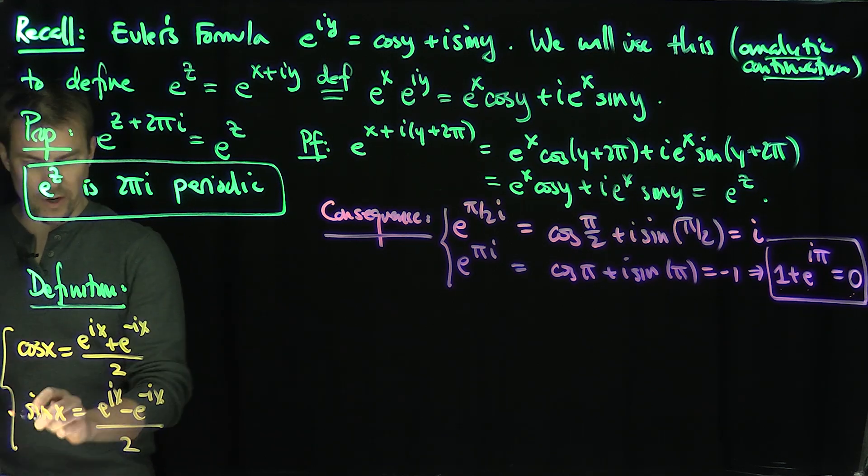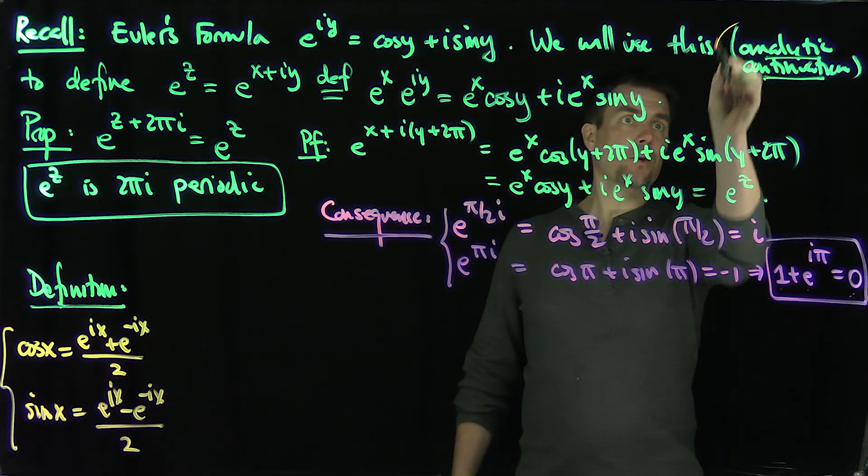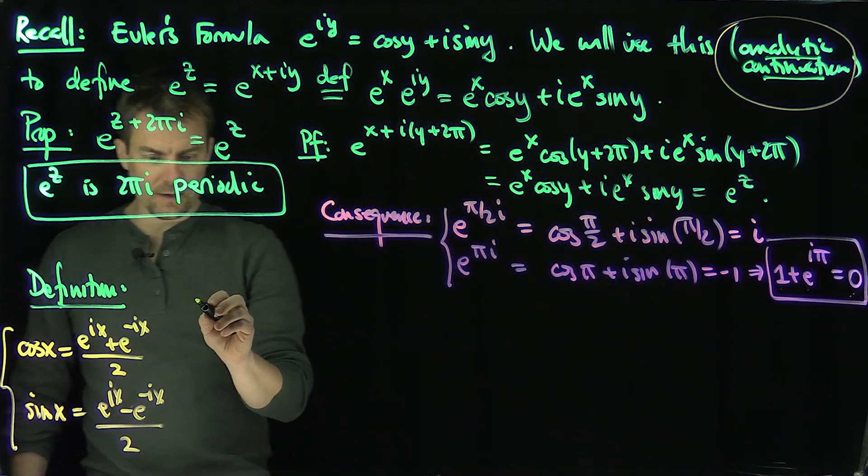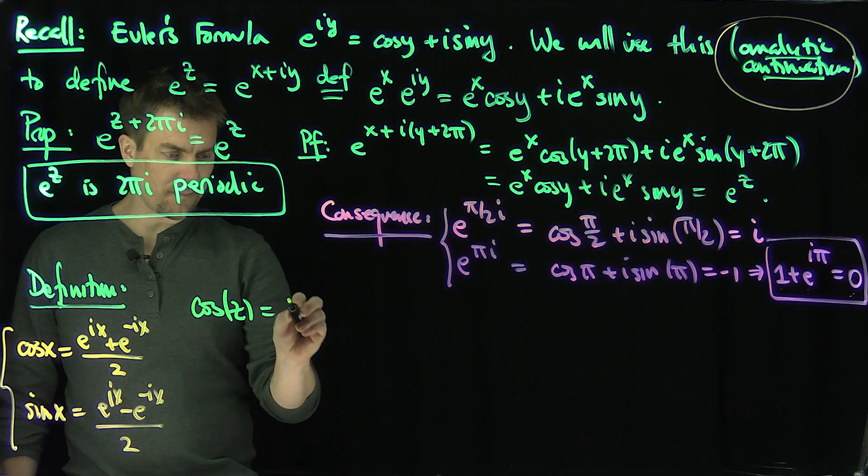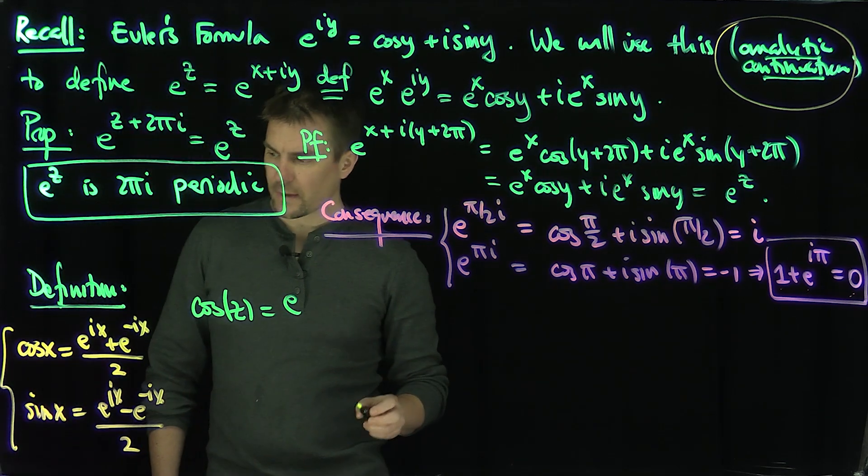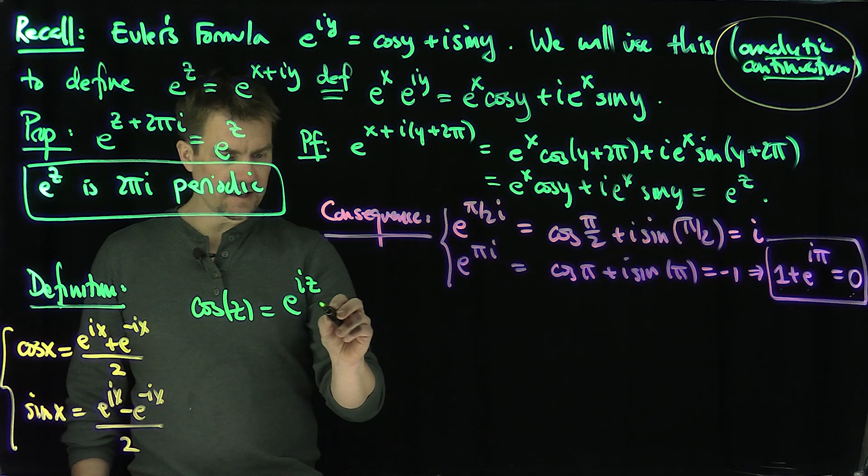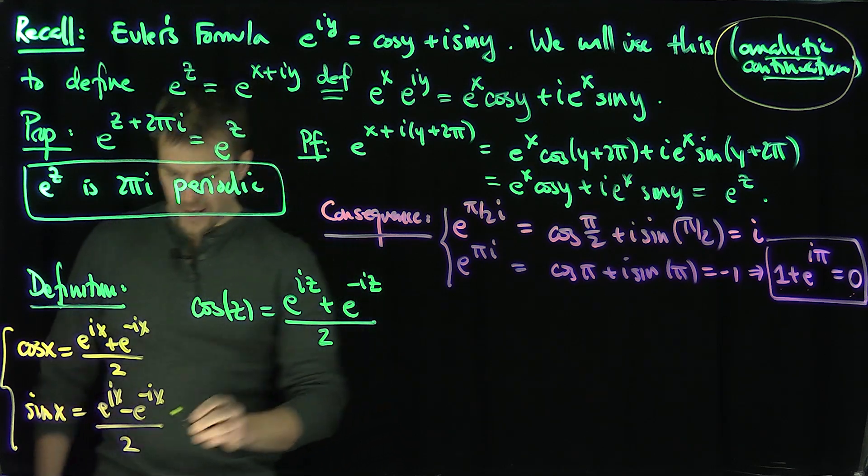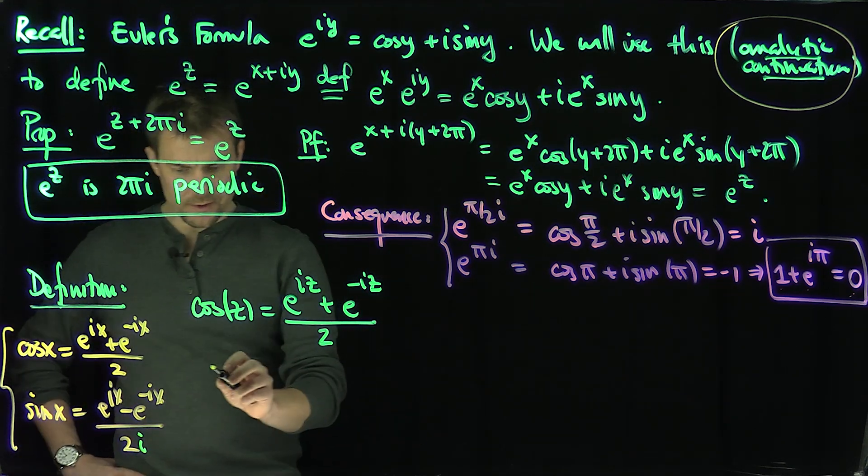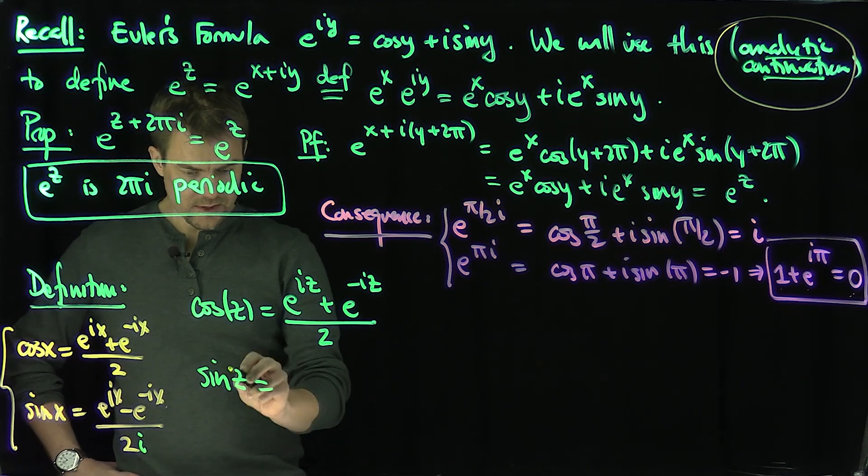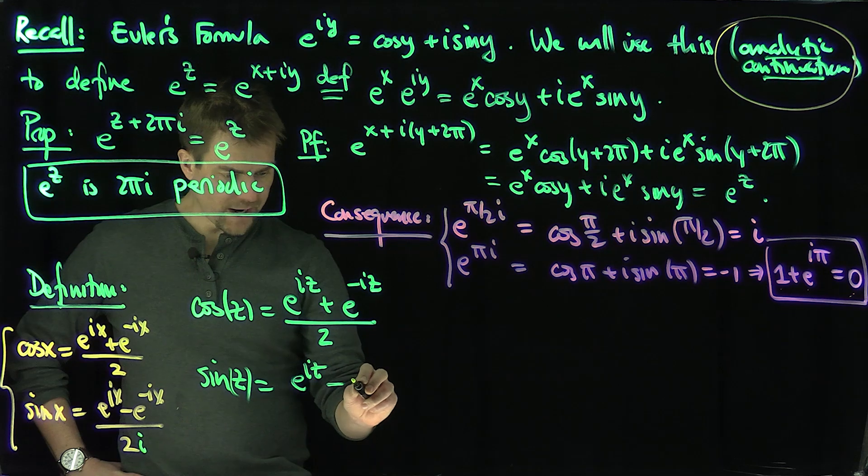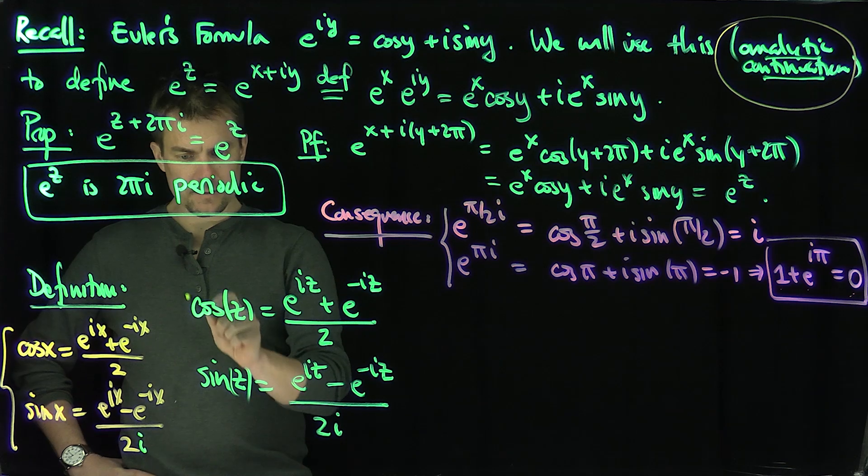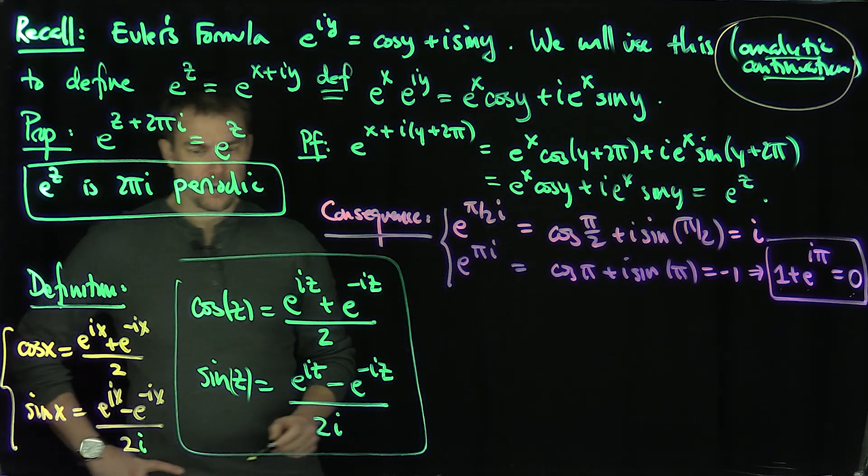I'm going to use analytic continuation, which we haven't proven yet, as motivation for these definitions. The cosine of z is going to be (e^(iz) + e^(-iz))/2. There's a 2i down here for sine, so sine of z is going to be (e^(iz) - e^(-iz))/2i like that.